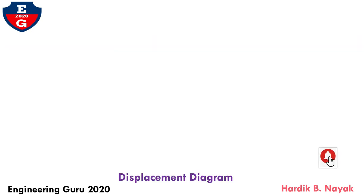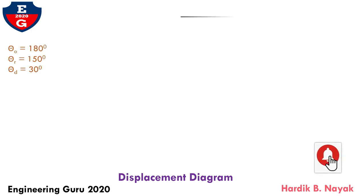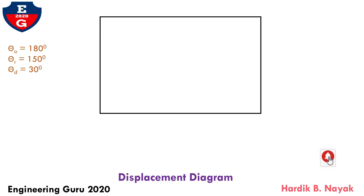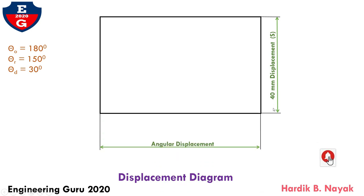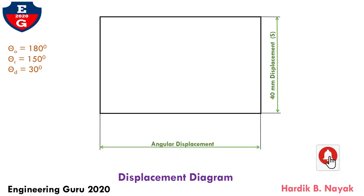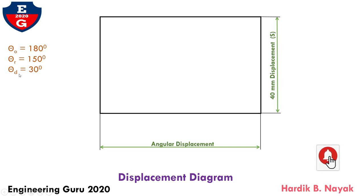Let's start with the displacement diagram. Cycloidal motion is given for both outstroke and return stroke. I will share one easy technique for drawing the displacement diagram of cycloidal motion. Draw one rectangle from the given data. Lift of follower equals 40 mm on the y-axis and angular displacement on the x-axis. Here, theta-O equals 180 degrees, theta-R equals 150 degrees, and theta-D equals 30 degrees are given.